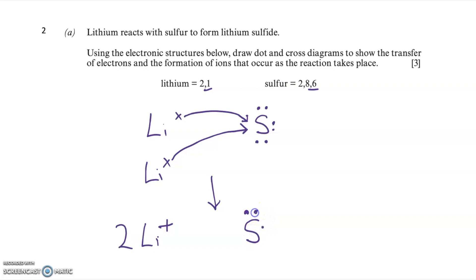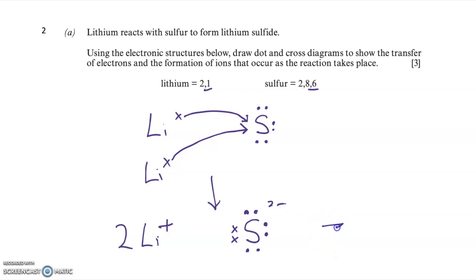This is a three mark question. You get one mark if you had two lithium atoms losing one electron each, with the electrons being transferred to the sulphur. You get the second mark if you had the sulphur gaining two electrons. And you get the third mark if you have the correct ions — two Li⁺ and one S²⁻ ion.